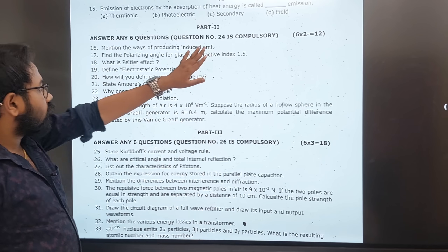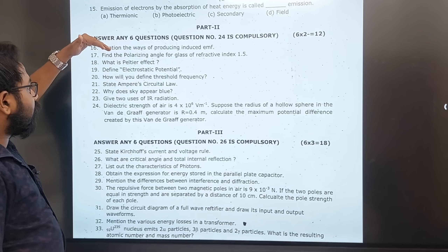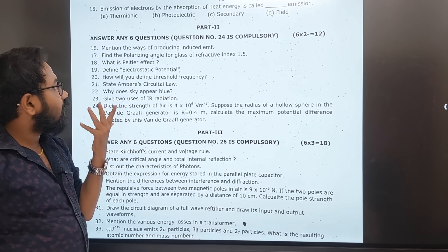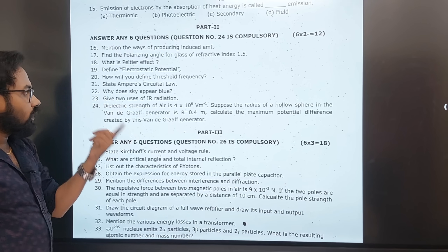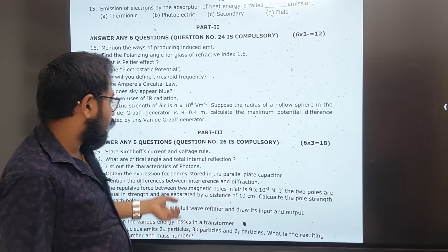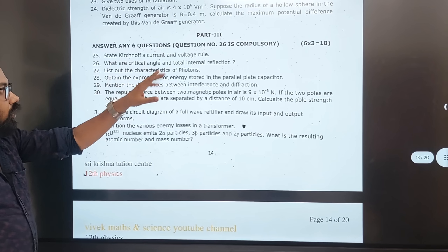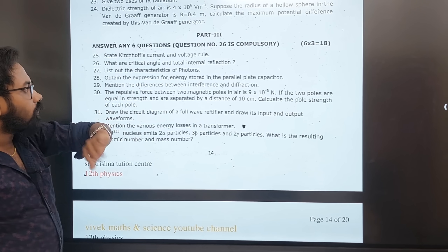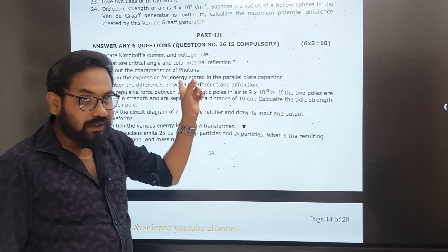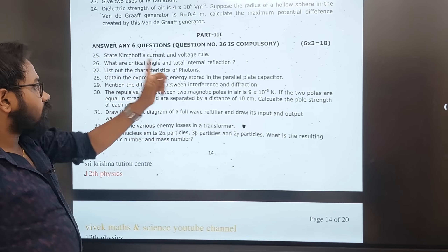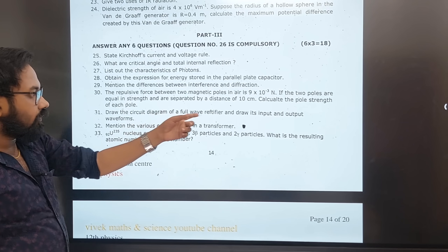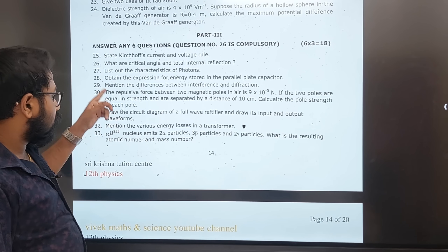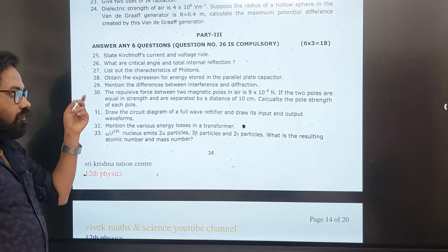July 2023: Peltier effect, electrostatic potential, threshold frequency, Ampere's circuit law. Sky appears blue — why? Uses of infrared. Van de Graaff generator (repeated). Current and voltage relationship, critical angle and total internal reflection (easy), expression for energy stored, energy storage, difference between interference and diffraction, full-wave rectifier diagram and waveform, energy loss in a transformer. All of them repeat — ripple C force is very important.